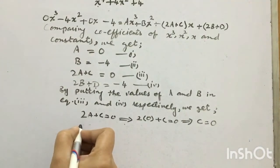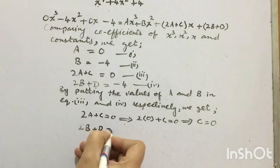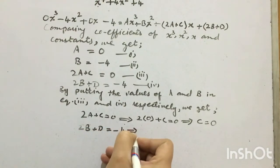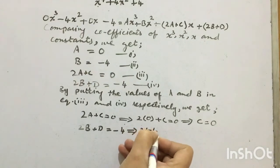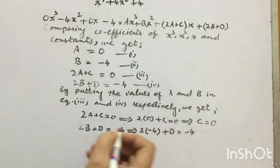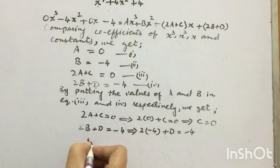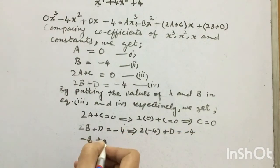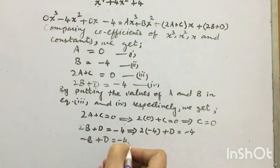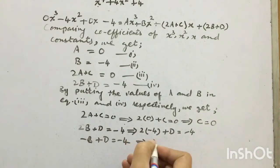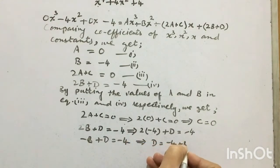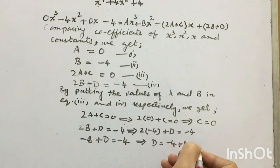Now using 2b plus d equals minus 4, substituting b equals minus 4, we get 2 into minus 4 plus d equals minus 4, so minus 8 plus d equals minus 4, which means d is equal to minus 4 plus 8, which equals 4.